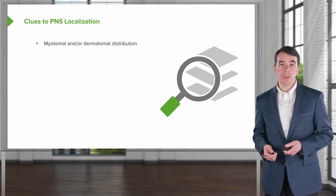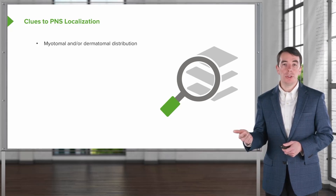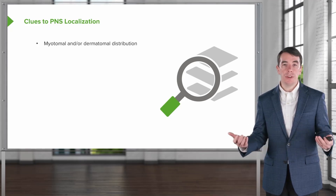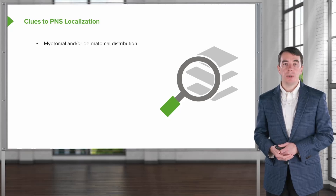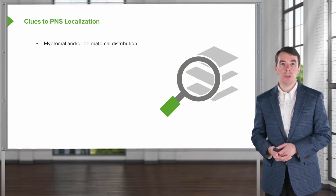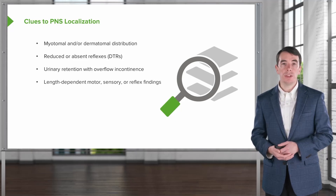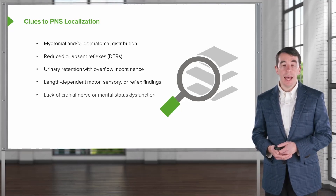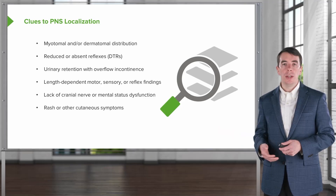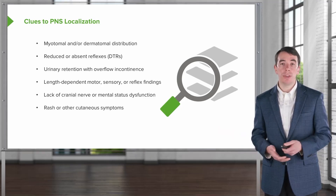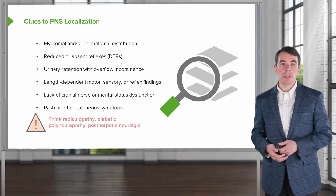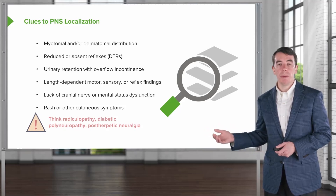Clues pointing to a peripheral nervous system localization include a myotomal or dermatomal distribution of weakness or sensory changes, reduced or absent deep tendon reflexes, urinary retention with overflow incontinence, length-dependent motor and sensory changes on examination, lack of cranial nerve involvement, normal mental status, and a rash or other cutaneous symptoms. Common peripheral nervous system conditions include radiculopathy, diabetic polyneuropathy, and postherpetic neuralgia.